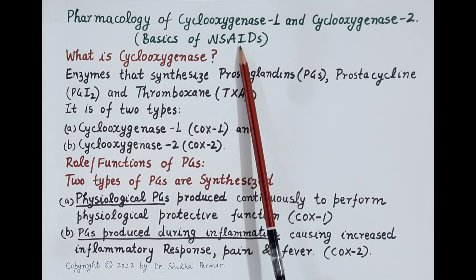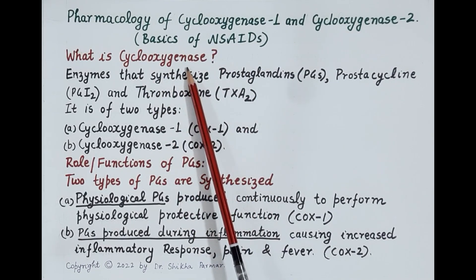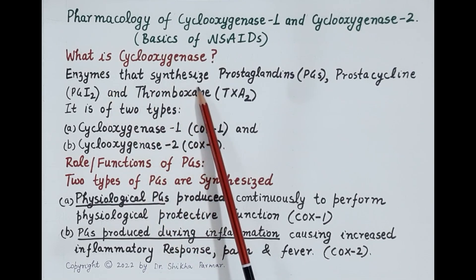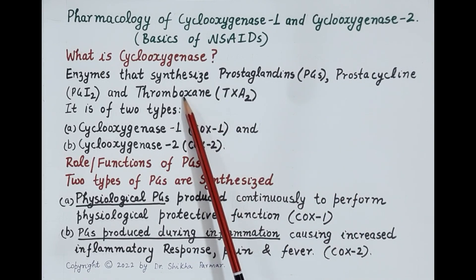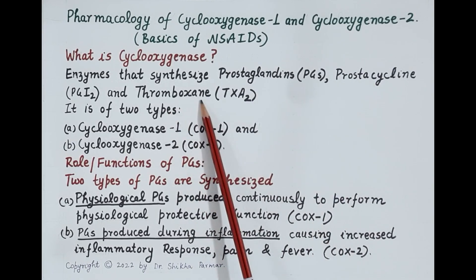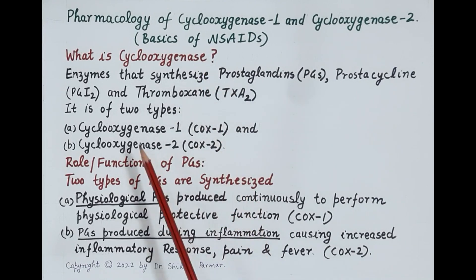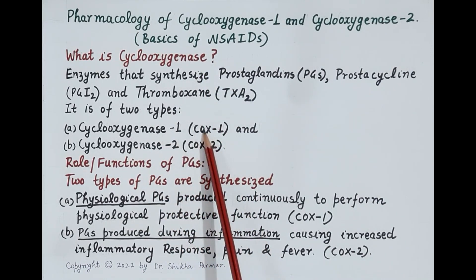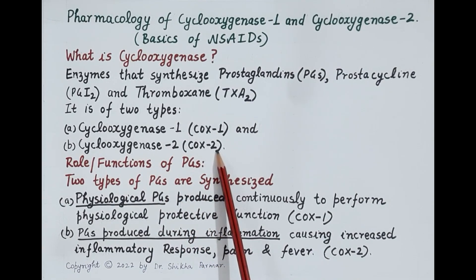NSAIDs are one of the most widely used drugs. First of all, let's understand what cyclooxygenase is. Cyclooxygenase is an enzyme that synthesizes prostaglandins, prostacyclin, and thromboxane. This cyclooxygenase enzyme is of two types: cyclooxygenase 1, in short COX-1, and cyclooxygenase 2, in short COX-2.